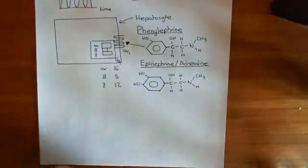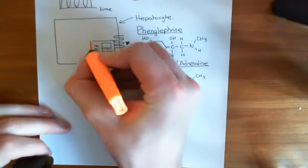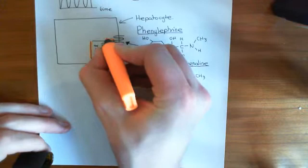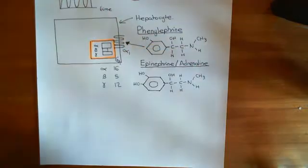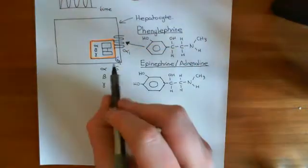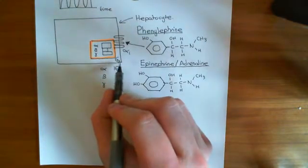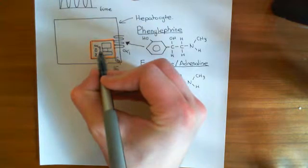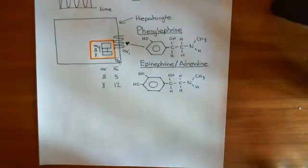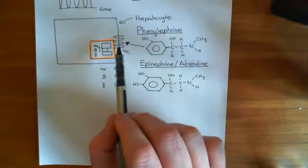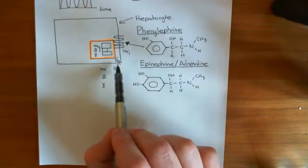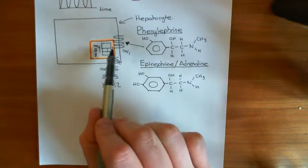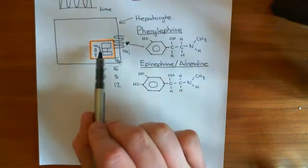The G-protein is named after which alpha subunit it has — we don't care what the beta and gamma subunits are. So if you have a GQ heterotrimeric G-protein, what that means is that the alpha subunit is the alpha-Q subunit. The alpha-1 receptor is coupled to the GQ G-protein, meaning the alpha subunit it's coupled to is alpha-Q.